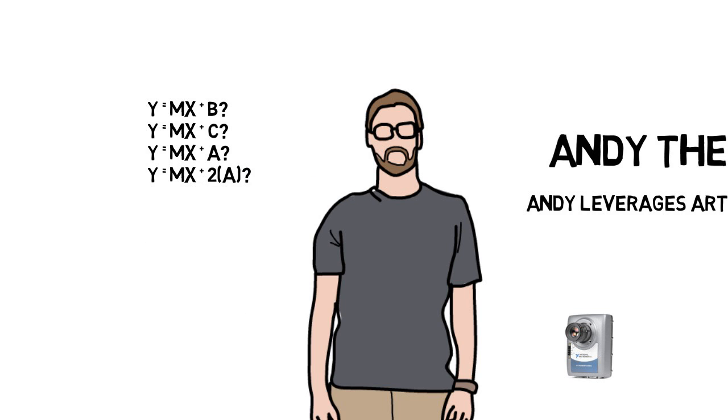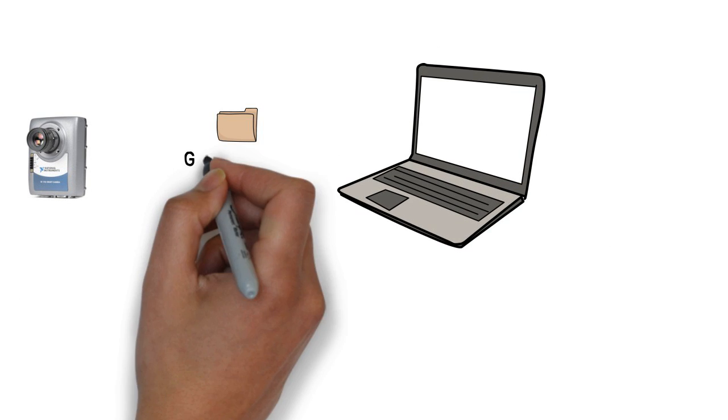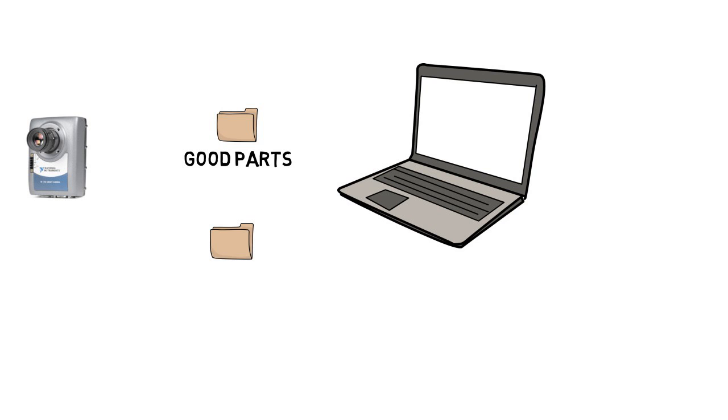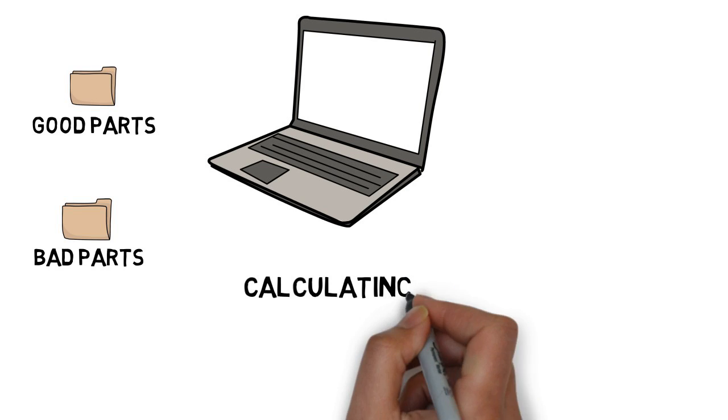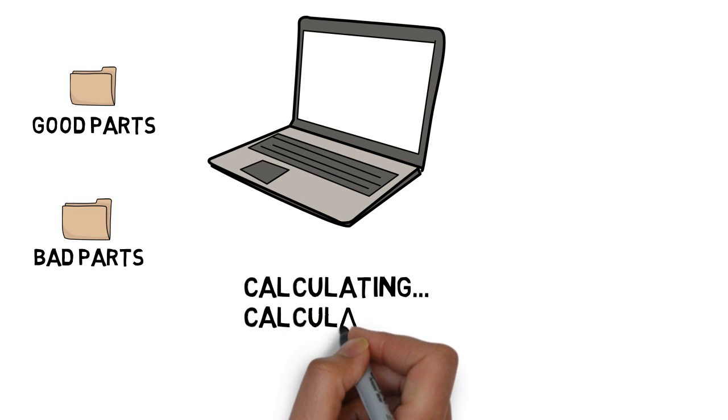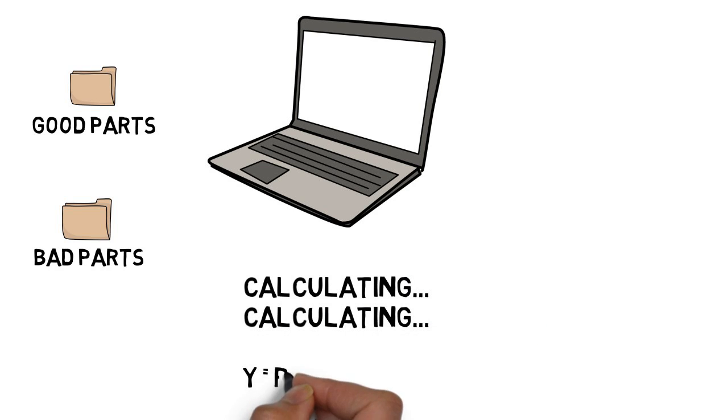With Andy's new tool, Neural Vision, he simply creates folders on the PC and calls them good and bad, and then drops images into them. Neural Vision then runs tens of thousands of algorithm combinations to define good and bad for him.